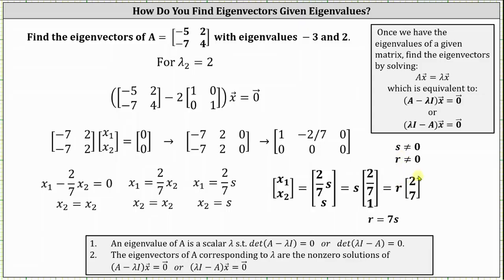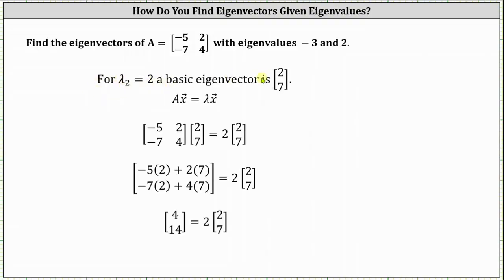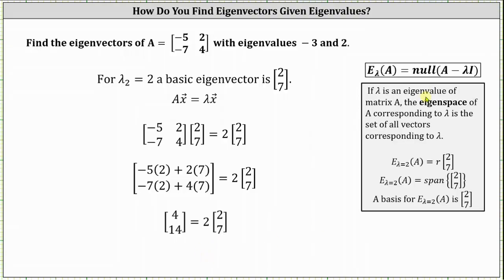Using the form without a fraction, we can say the eigenvectors corresponding to lambda sub two equals two are all the scalar multiples of the vector two, seven, except the zero vector. A basic eigenvector is the vector two, seven. Checking it satisfies the eigenvector equation, we can see it is satisfied because the vector four, fourteen equals two times the vector two, seven. The eigenspace of matrix A corresponding to lambda equals two is the span of the set containing the vector two, seven, and a basis for this eigenspace is the vector two, seven.